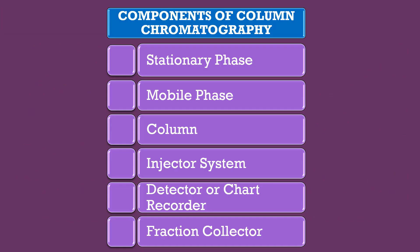There are six components of column chromatography. They are: stationary phase, mobile phase, column, injector system, detector or chart recorder, and finally, fraction collector.